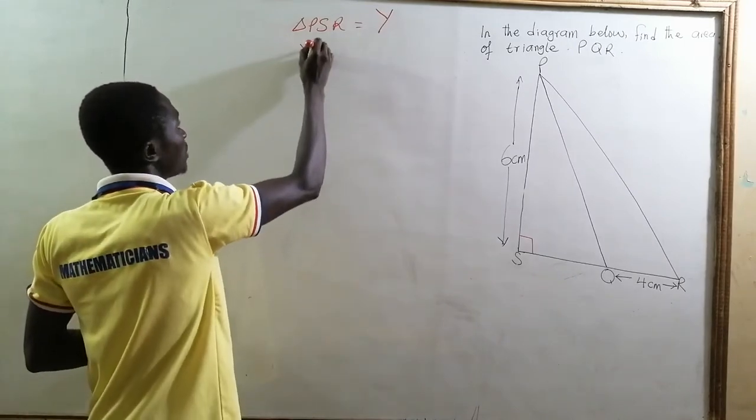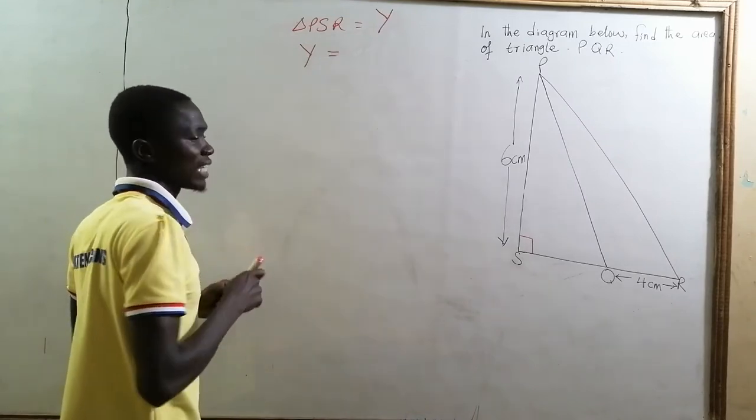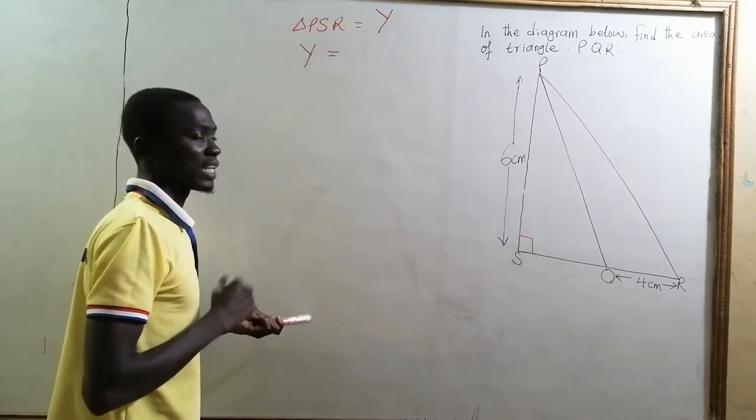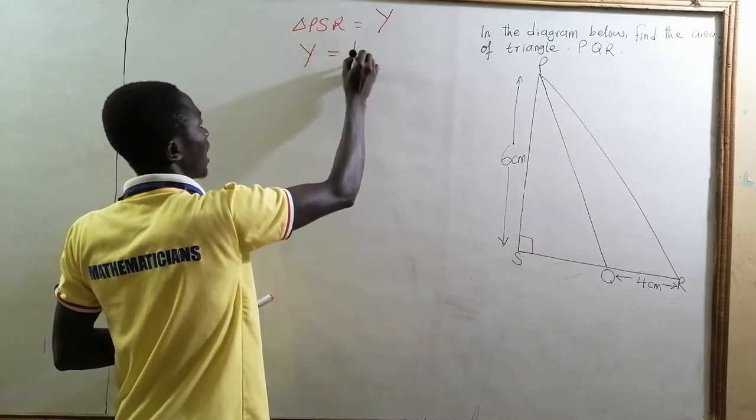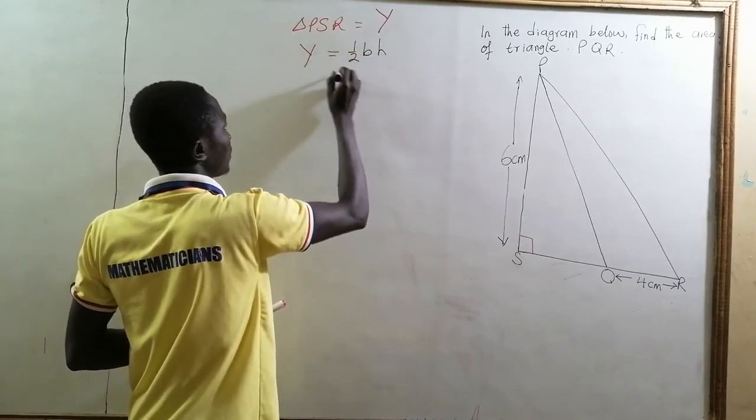Now the area of triangle PSR is equal to half times base length times perpendicular height.